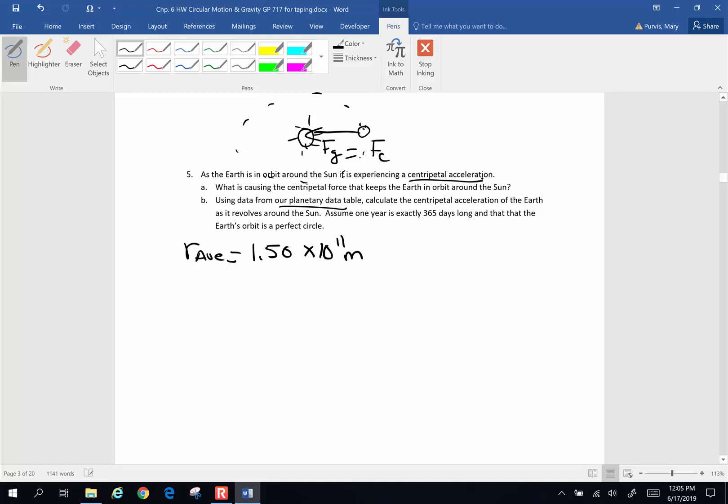We're looking for centripetal acceleration. And so centripetal acceleration, we have two equations, v squared over r, or we have 4 pi squared r over t squared. Well, we have radius, and t is the time to go around once. We have radius. We don't have average velocity, but t is the time to go around once. Well, time to go around once is one full calendar year, and one year, we have said, is 365 days.